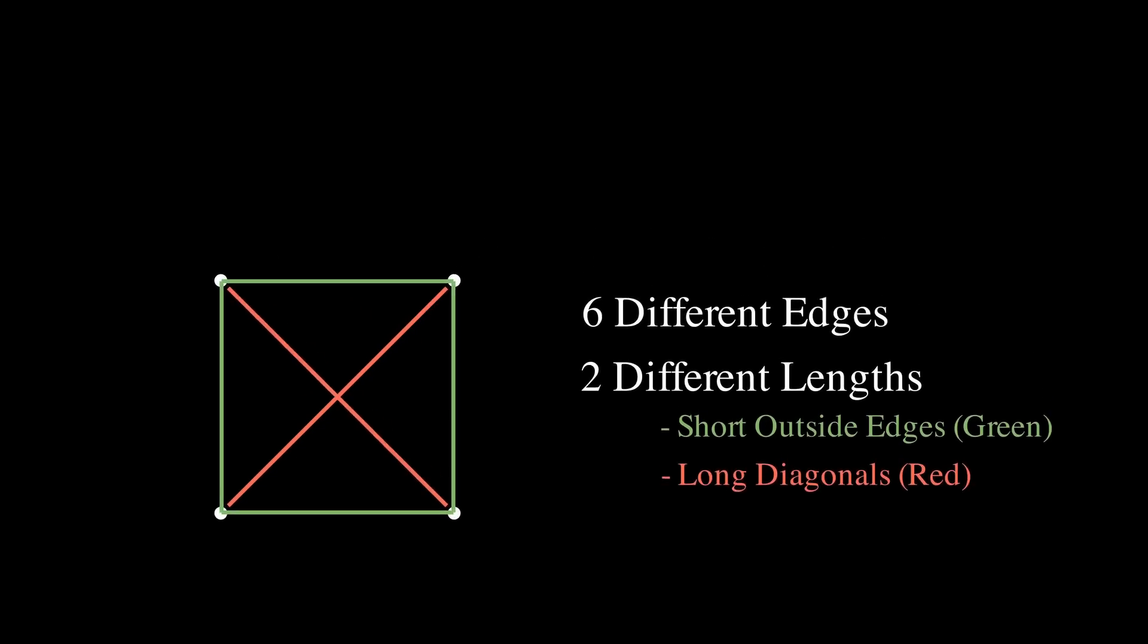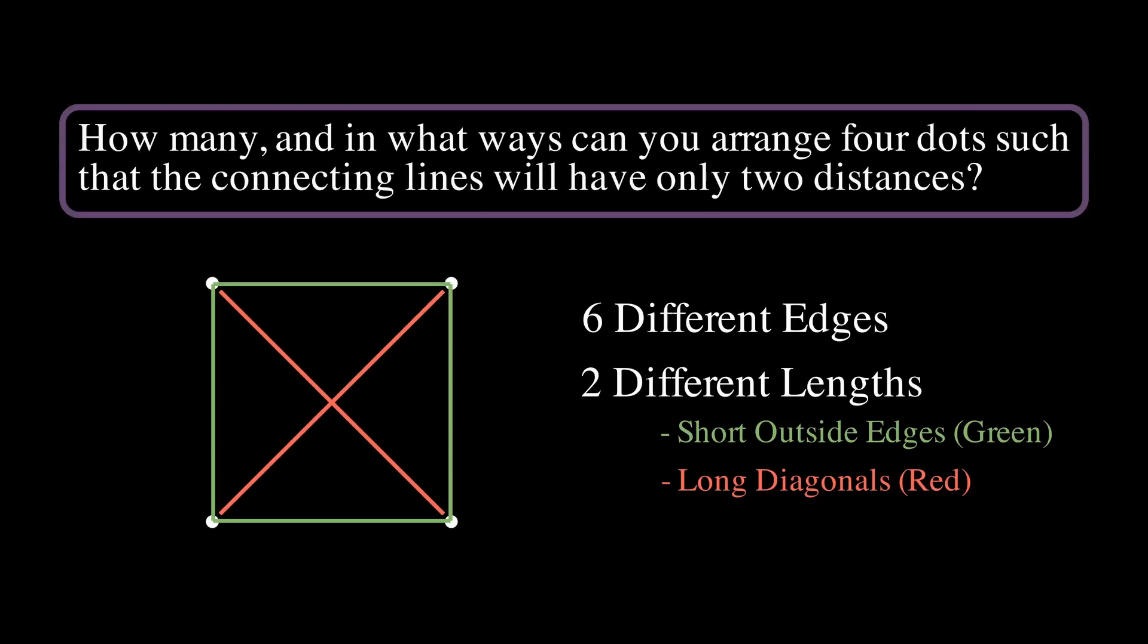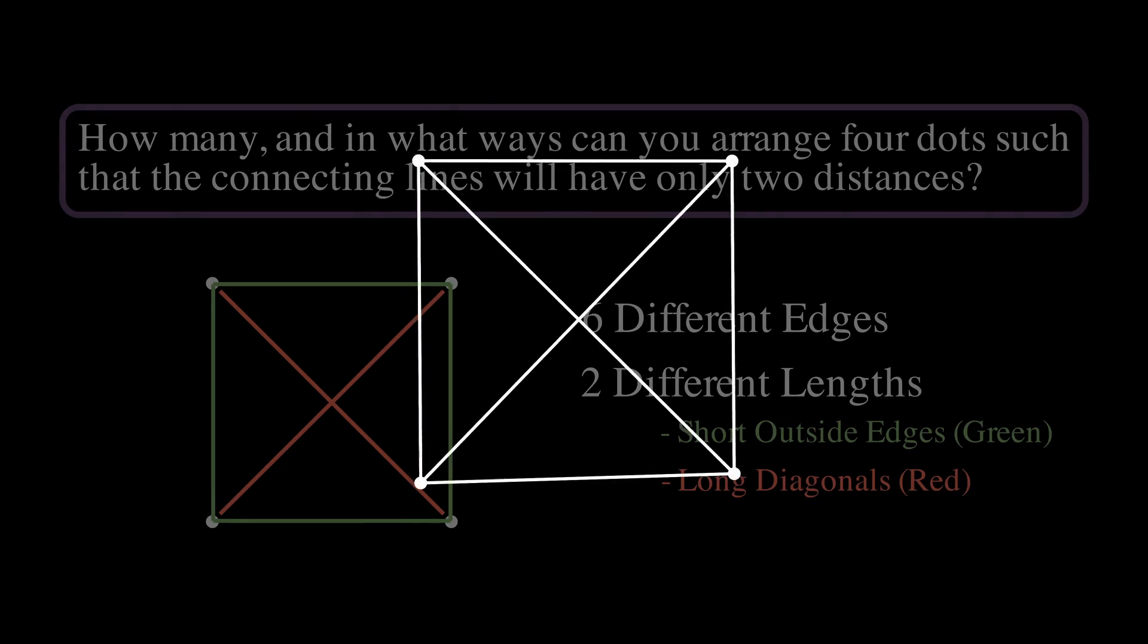Here's the puzzle. How many and in what ways can you arrange four dots in the plane, such that the connecting lines will only have two distances?